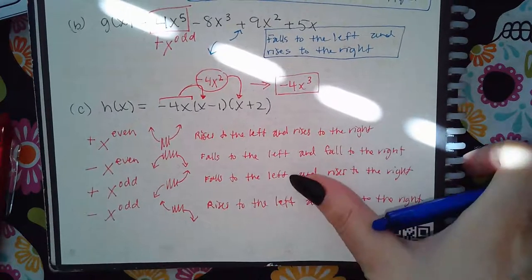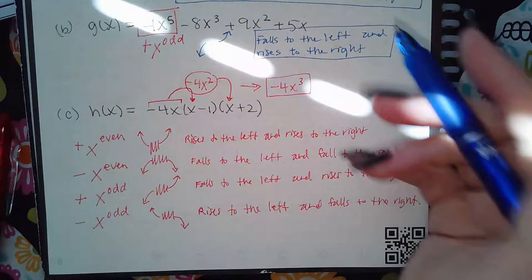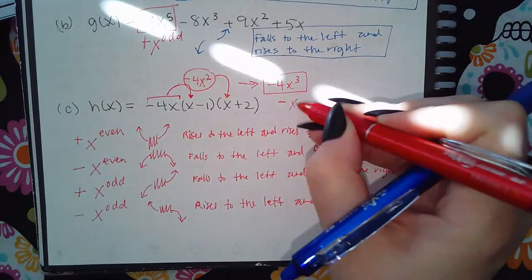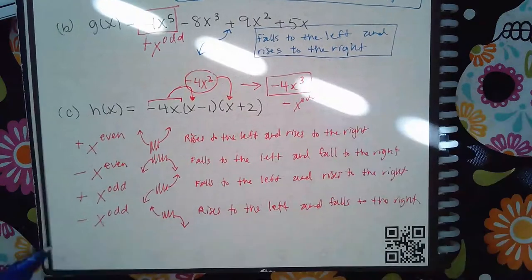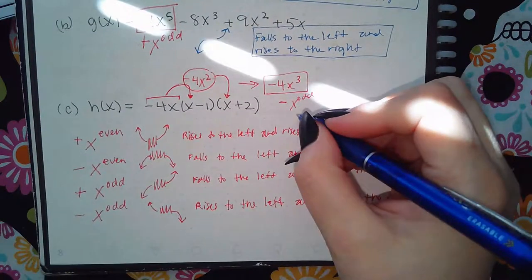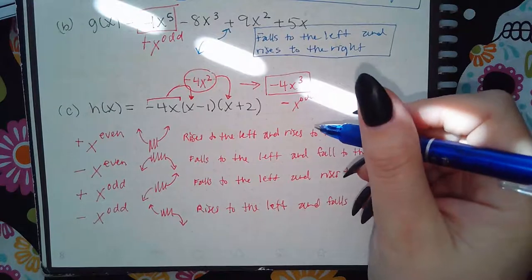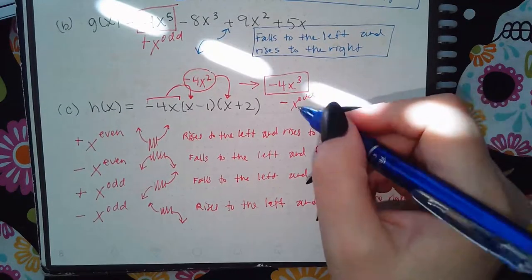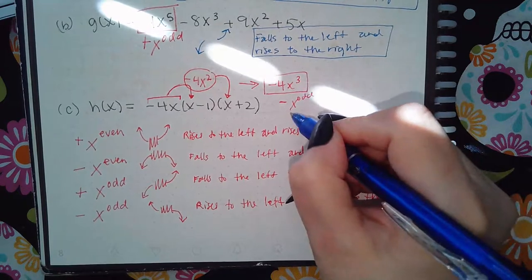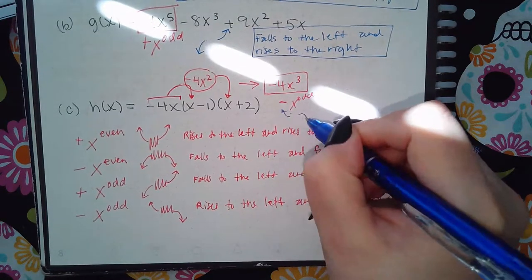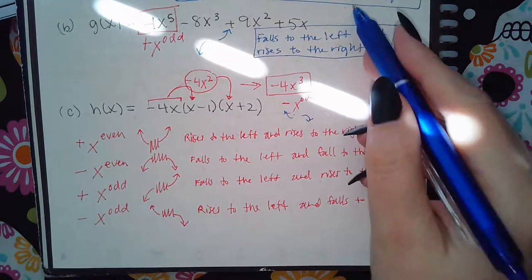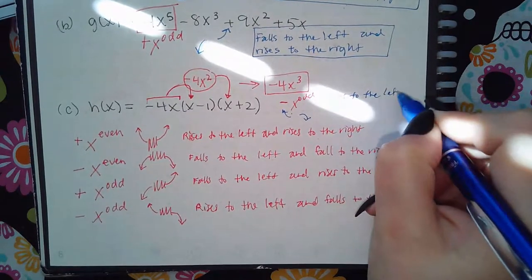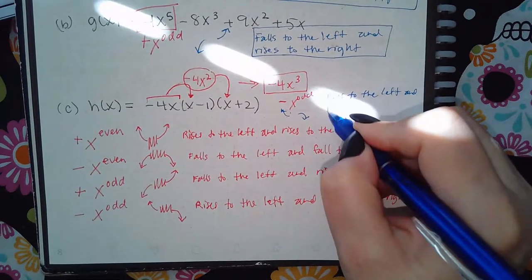For the last problem, there's a negative coefficient and an odd exponent — the same situation as before. It's going up on the left and down on the right, so the statement is: rises to the left and falls to the right.